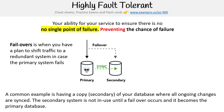If the primary database happens to fail for whatever reason, whether it's hardware or otherwise, something's going to detect that there's something wrong with the primary, and it's going to fail over to the secondary. The secondary is then going to be promoted to being the primary instance.